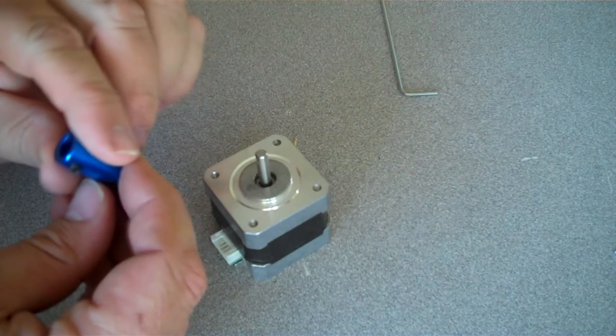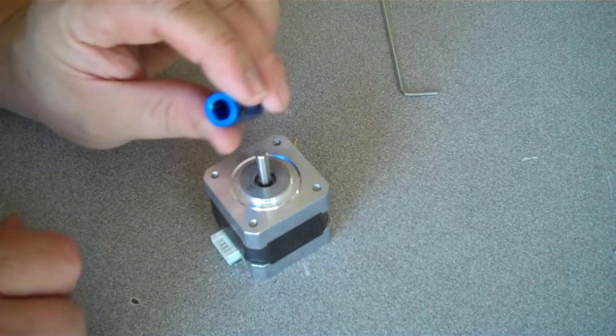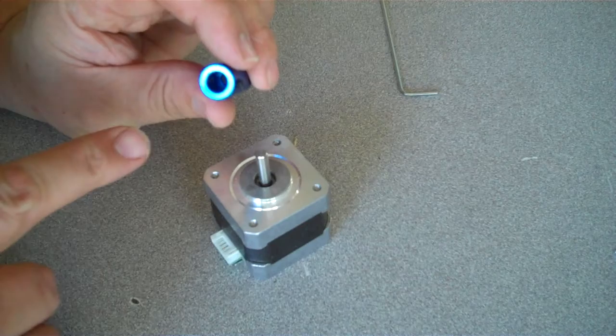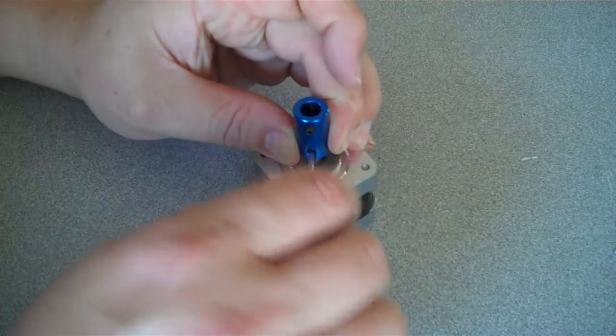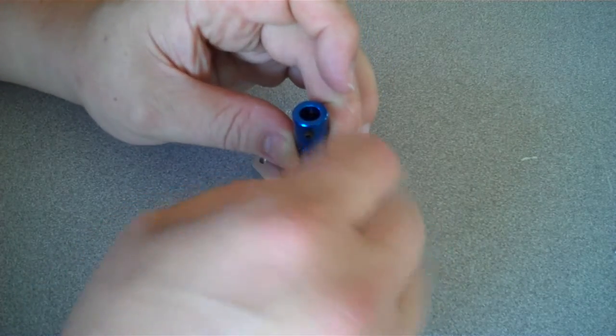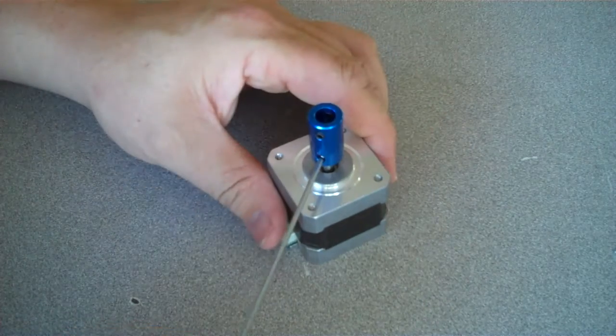As you look inside the barrel of the coupler, notice the little shelf where it transitions from a five millimeter hole to an eight millimeter hole. As you put it on the motor, you want to make sure that the shaft goes almost up to that transition point, but not quite. And just as with the pulley, make sure that at least one of those screws goes against the flat part of the motor shaft.